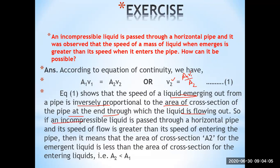So if an incompressible liquid passes through a horizontal pipe and its speed when it emerges is greater than its speed when it enters, then it means that the area of cross-section A₂ at the exit is less than the area of cross-section A₁ at the entrance.